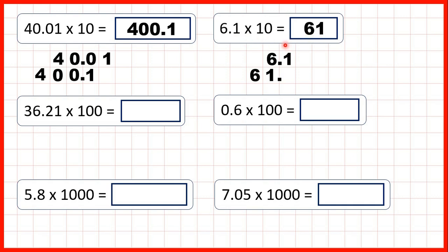That makes sense because 6 times 10 is 60 and 1 tenth times 10 is 1. Because if we have 1 tenth and we multiply it by 10 so that we have 10 tenths, 10 tenths is the same as one whole.